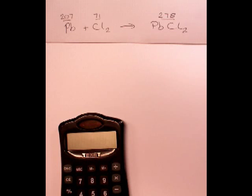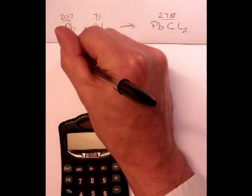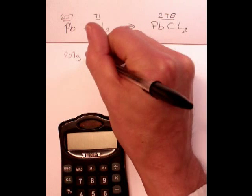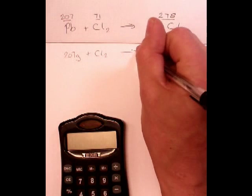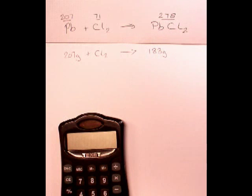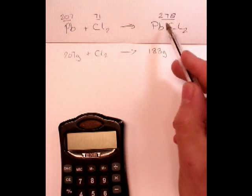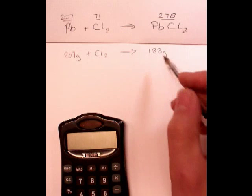We'll work on a calculation on percentage yield using this reaction. So, we've been given a question that says that we had 207 grams of lead and that was reacted with chlorine. And we produced 183 grams of lead chloride. Now, clearly, that's not what we would have expected. We would have expected 278. And, in fact, we've got less lead chloride than we had lead. That doesn't matter.